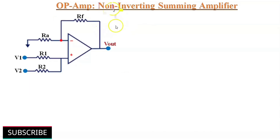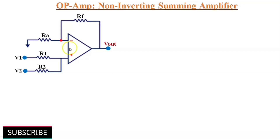Now we will discuss op-amp as a non-inverting summing amplifier. By applying two or more inputs to the non-inverting configuration of the op-amp, we can construct a non-inverting summing amplifier. As the inverting summing amplifier produces the negative sum of its input voltages, this non-inverting summing amplifier configuration will produce the positive sum of its input voltages.